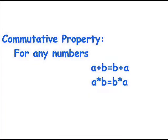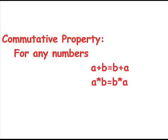Let's start with commutative properties. Commutative property: for any numbers, a plus b equals b plus a, or a times b equals b times a. This only works with addition and multiplication.